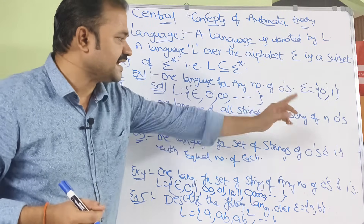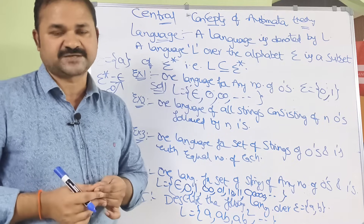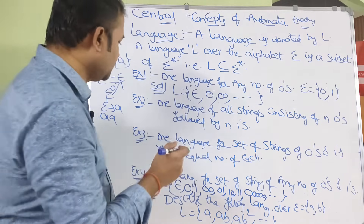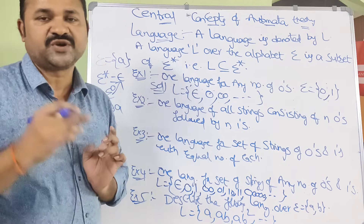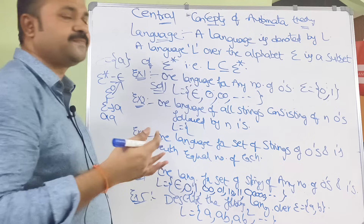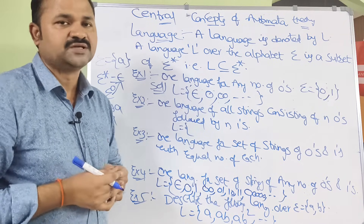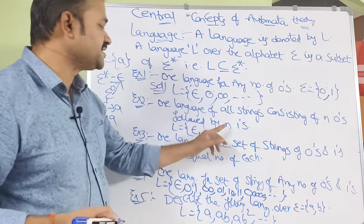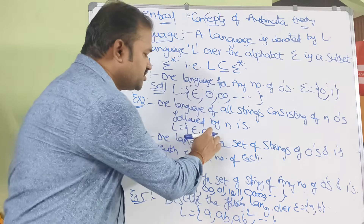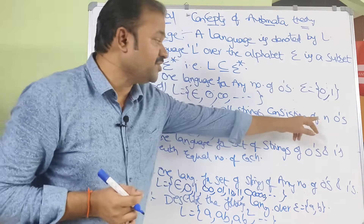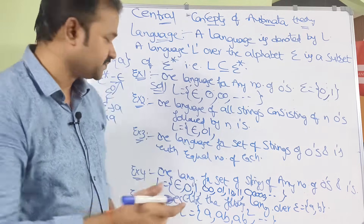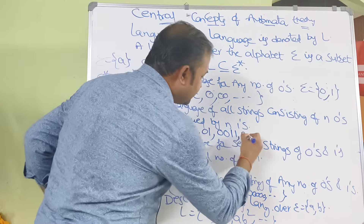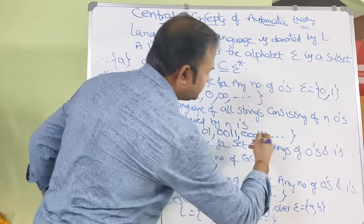Third example: the language of all strings consisting of n zeros followed by n ones. The n value must be the same for zeros and ones. So when n=0, the string is epsilon; when n=1, the string is 01; when n=2, the string is 0011; when n=3, the string is 000111. Likewise we can take n number of strings.